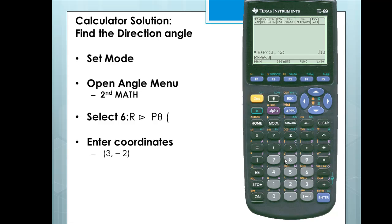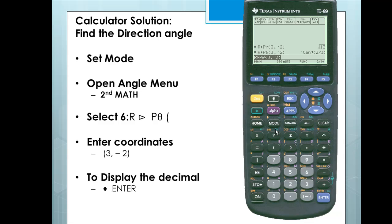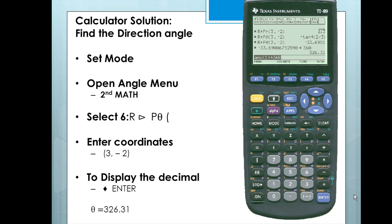We'll enter our coordinates, 3 comma negative 2. I'll close off the function and press Enter. To get the decimal value, we hit 3rd and Enter. Notice that the direction angle must be positive, so we'll add 360 degrees for a direction angle of 326.31 degrees.